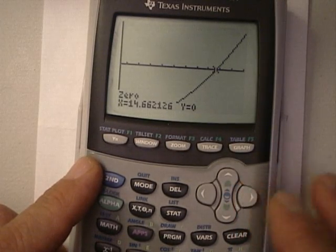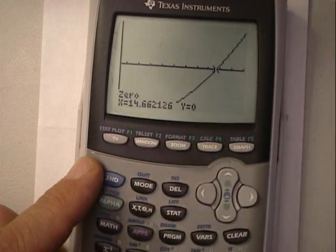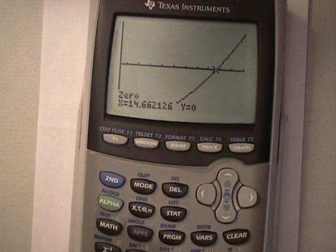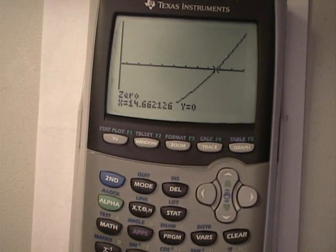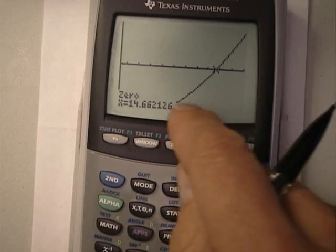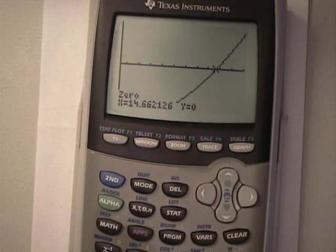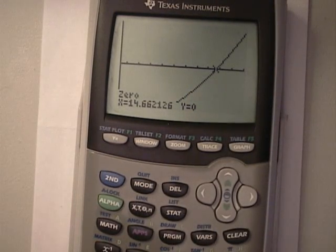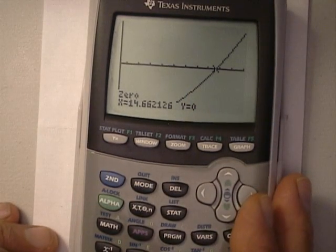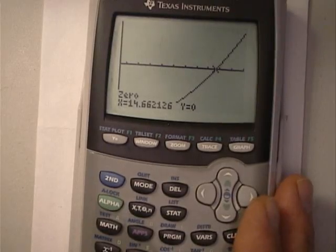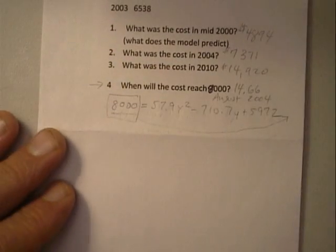And it jumps right on there. And notice, it gives me the same answer: 14.66, August of 2004. But you notice the output is zero as opposed to 8,000 in the other technique. That's because we've shifted the entire function down by 8,000, so the output is now zero. But it doesn't matter—the input is still the same, August of 2004.